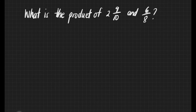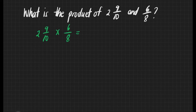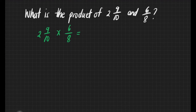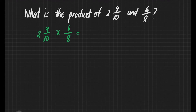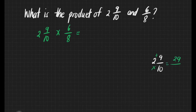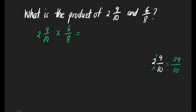We have another example. What is the product of 2 and 9 tenths and 6 eighths? Let's rewrite the fractions first. In this case, we cannot multiply right away our numerators and denominators because we have a mixed number here. It is important that we change this mixed number to an improper fraction. A mixed number is a combination of a whole number and a proper fraction. So, 2 and 9 tenths: 2 times 10 is equal to 20, plus 9 is equal to 29, then copy the denominator, which is 10. That gives us 29 tenths times 6 eighths.